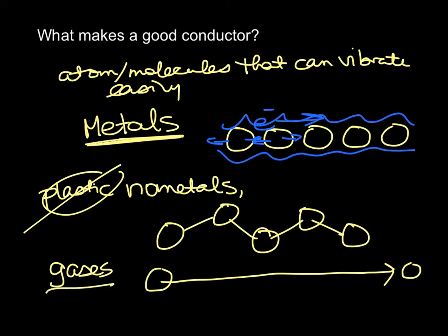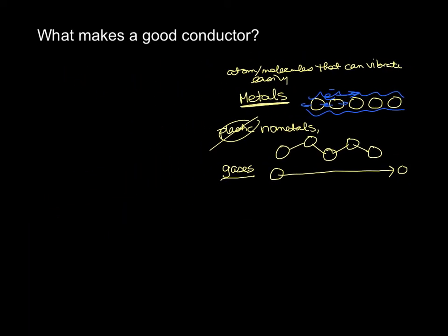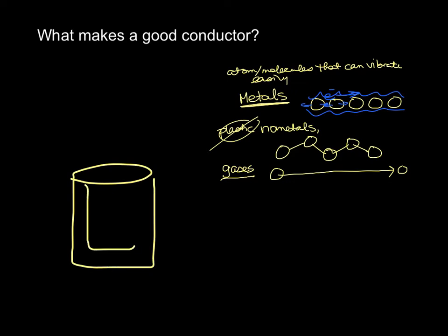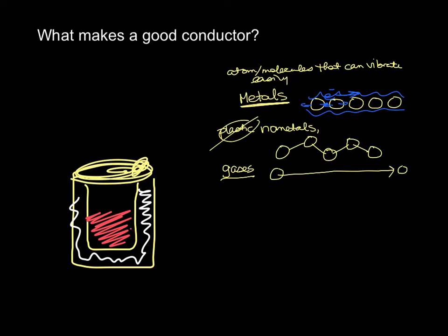A vacuum is an area where there are actually no molecules — not a good conductor at all. Notice that insulated cups often have a double-cup design with empty space in between — basically a vacuum. There's nothing in there to allow conduction of heat, so if you have a hot beverage, the heat can't get through that space where there are no molecules to transfer the energy. That's why these are good insulators.